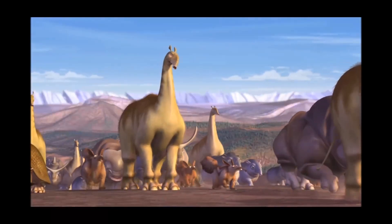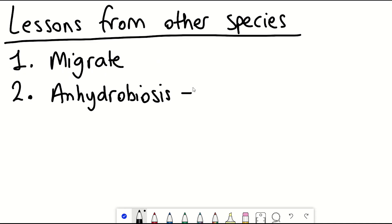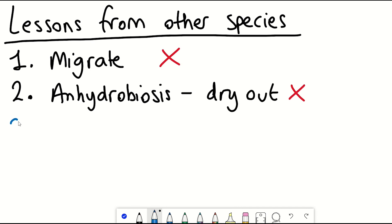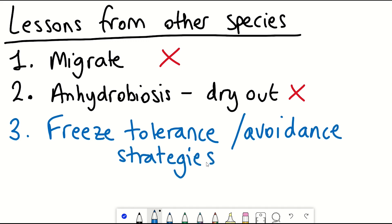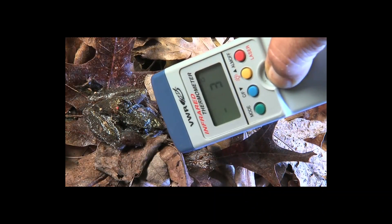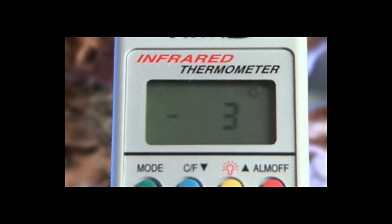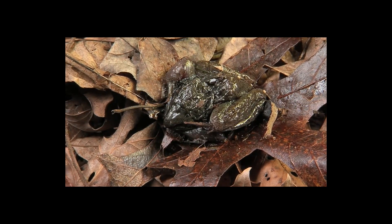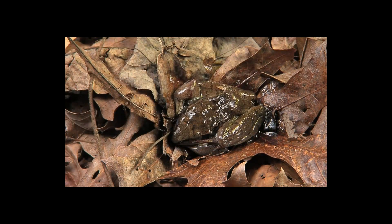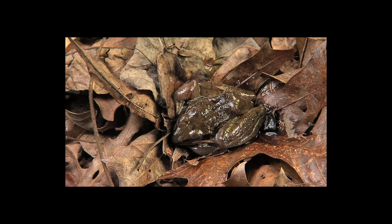Option three: freeze avoidance or extracellular freeze tolerance strategies, like the wood frog. It can endure freezing of up to 70% of its total body water in winter months and thaw within hours without any measurable change. When frozen, wood frogs show no cardiac or lung activity, brain function, or physical movement — but all capabilities are restored upon thawing.